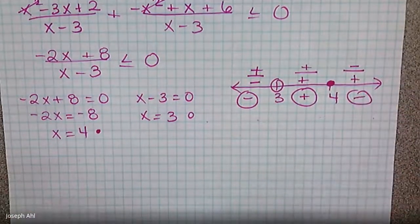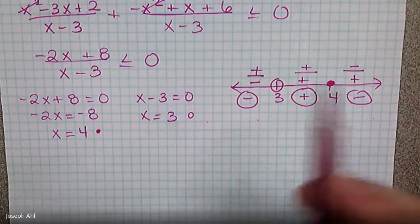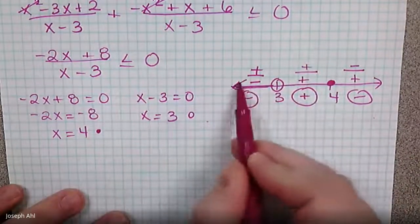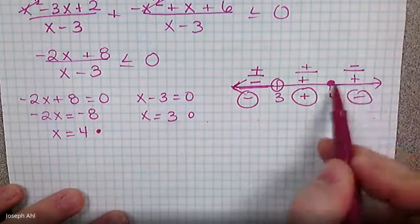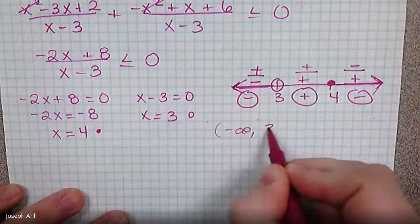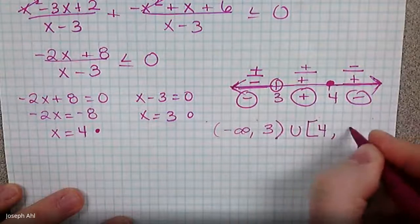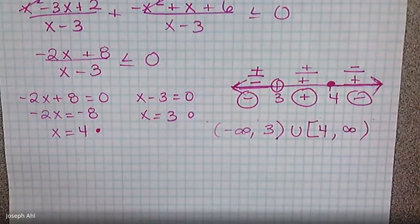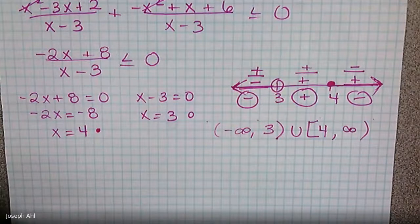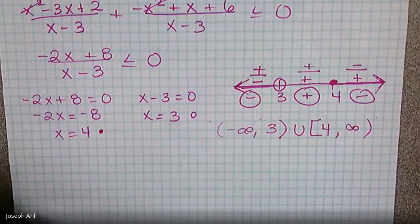We're looking for less than zero, so we want the negative regions — the section to the left of three and the section to the right of four. The solution in interval notation is negative infinity to three with a parenthesis, union bracket four to infinity. We'll do more rational inequalities algebraically next time. Let me know if you have any questions about the process — otherwise, have a great rest of your day.